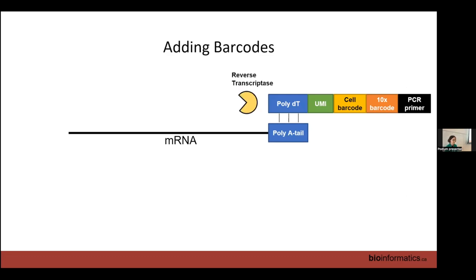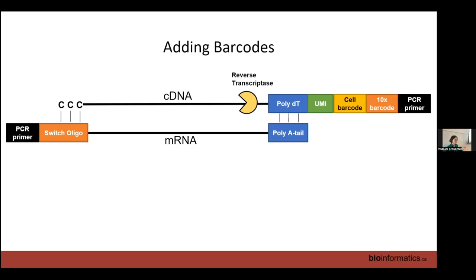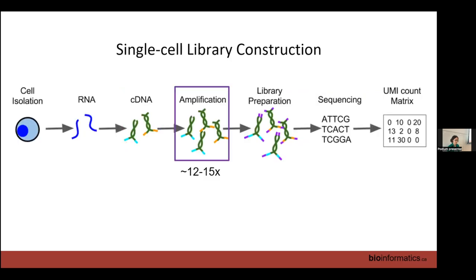We add a PCR primer so we can amplify this, then reverse transcriptase converts it into cDNA. It ends with some poly-C, allowing hybridization of a switch oligonucleotide, and reverse transcriptase synthesizes the other strand. Now we have cDNA we can amplify with standard PCR — about 12 rounds — giving us tons of DNA.